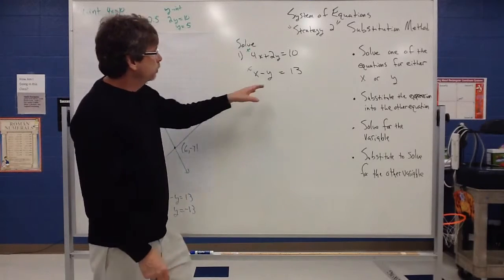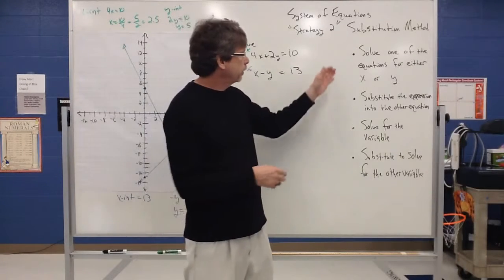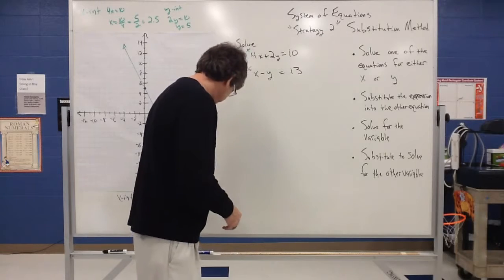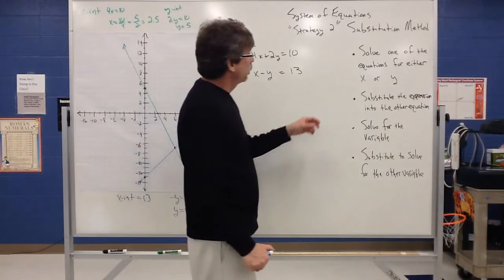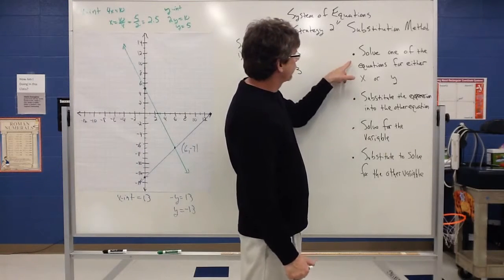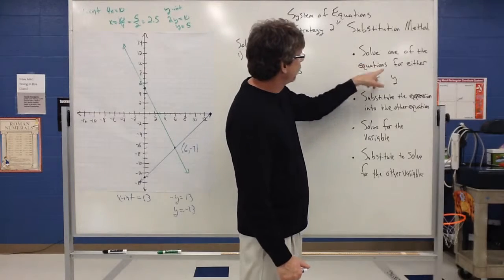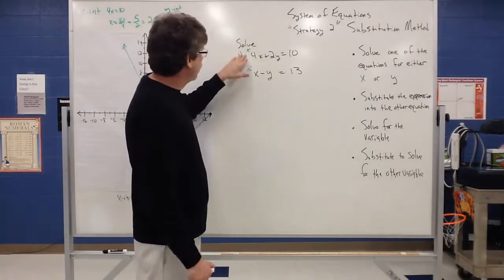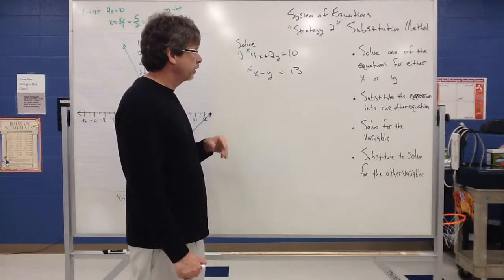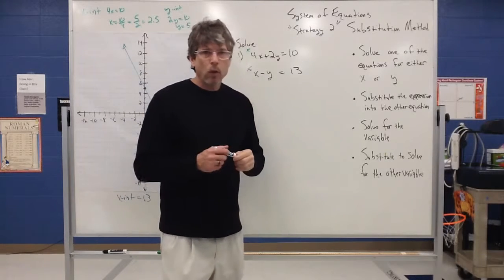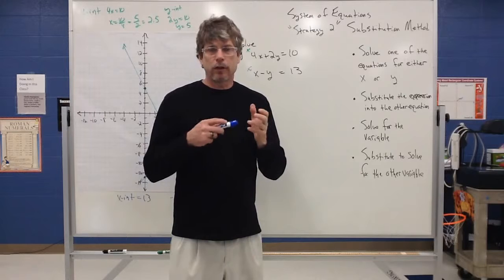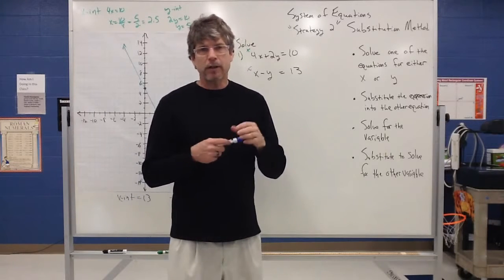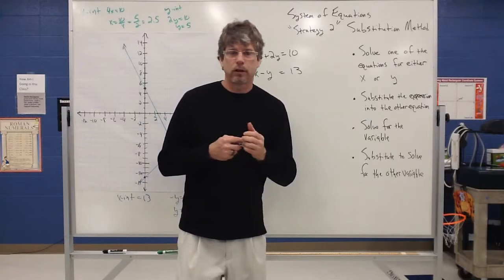Strategy 2, we want to use what we call the substitution method. So this kind of outlines what we're looking for in the substitution method. So step 1 is to solve one of the equations for either x or y. So I want to solve one of these equations for either x or y. What I'm looking for is the variable that does not have anything in front of it. That's going to be the easiest variable to isolate.